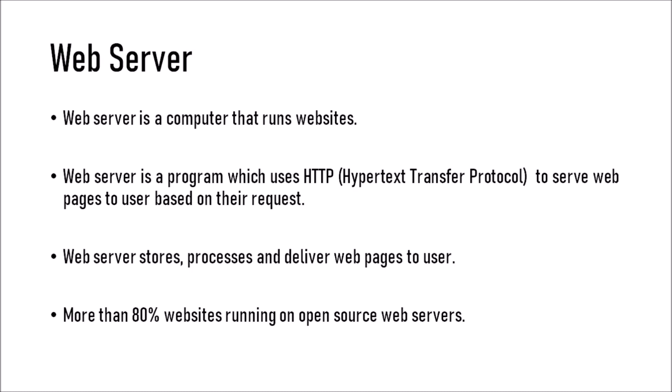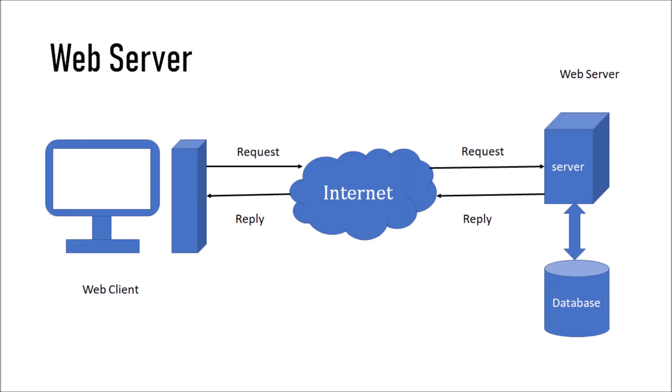More than 80% of websites are running on open source web servers. What is open source and what is proprietary? Open source means software which can be used by anyone without any licensing — you need not pay for it. In the case of proprietary, you have to pay some money for using it. So more than 80% of websites run on open source web servers.